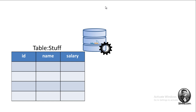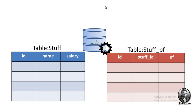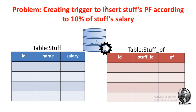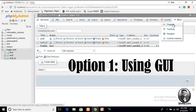In our scenario we have two tables: one for staff, which contains all staff information including salary, and another one is staff provident fund, where we store the amount of provident fund of each staff. We can assume it is 10 percent of staff salary. So we are going to create a trigger that automatically inserts the staff ID and the provident fund amount into the staff provident fund table when a new staff is inserted in the staff table.